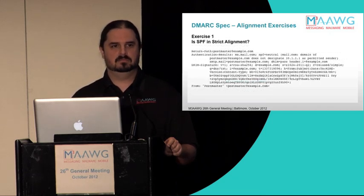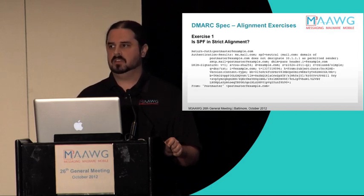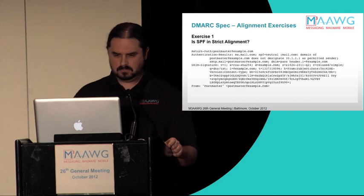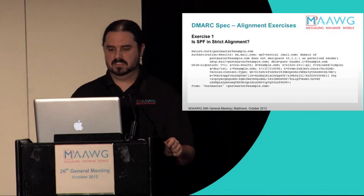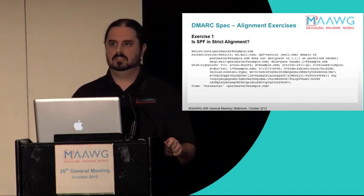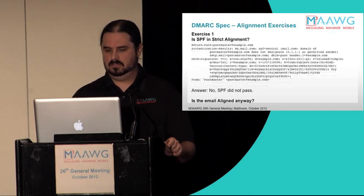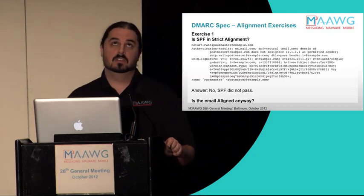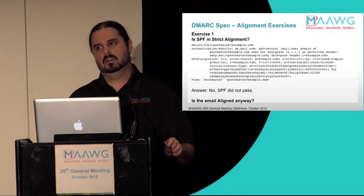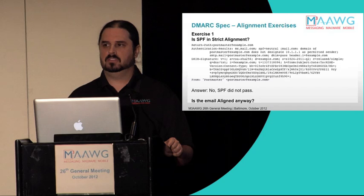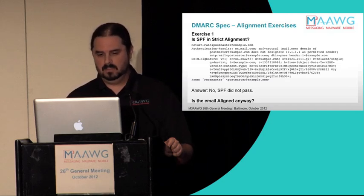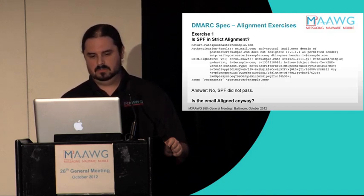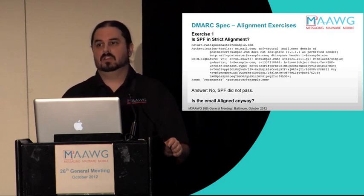Now let's find out whether you've been paying attention — audience participation. First exercise: is SPF in strict alignment? The answer is no, because SPF did not actually pass — it returned a neutral result. SPF has lots of different result flavors: soft fail, hard fail, neutral, pass. As far as DMARC is concerned, pass is the only thing that matters; anything other than pass is a failure. In the authentication results header, SPF is listed as neutral, so this email is unaligned because SPF provided no authenticated identifier.